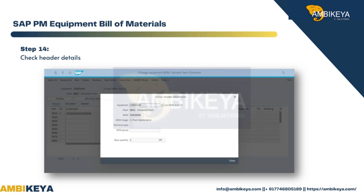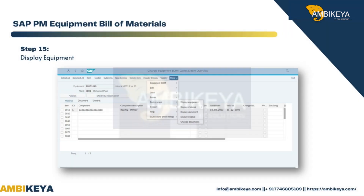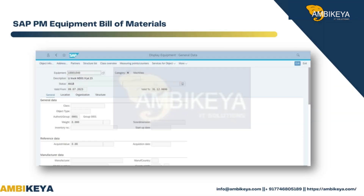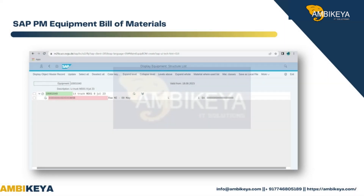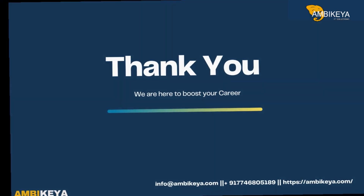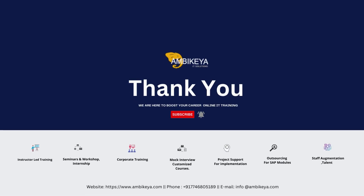Step 14 — Check header details. Step 15 — Display equipment. Step 16 — Go to the structure list and view the structure with BOM.